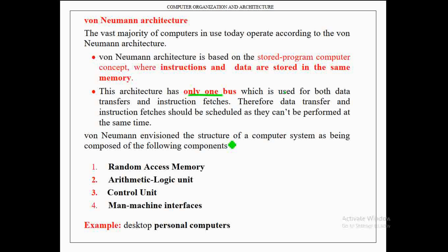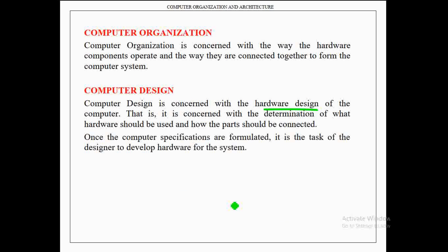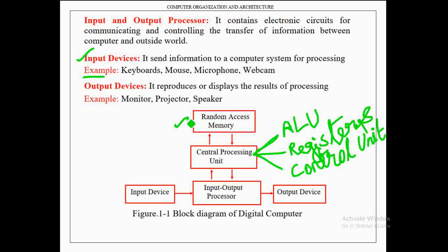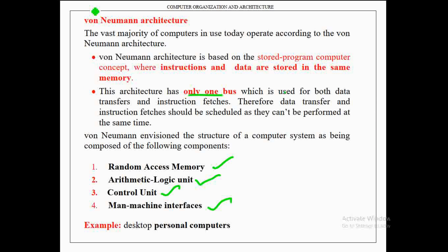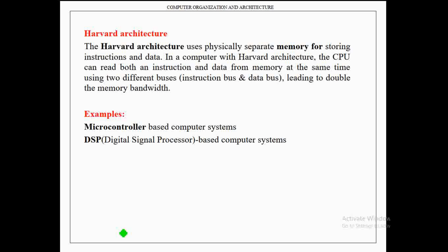Von Neumann envisaged the structure of the computer system as being composed of the following components: random access memory, arithmetic and logic unit, control unit, and man-machine interfaces. These components correspond to those seen in the block diagram of the digital computer. That is why almost all types of computers in use today are based on Von Neumann architecture. An example of Von Neumann architecture is the desktop personal computer.